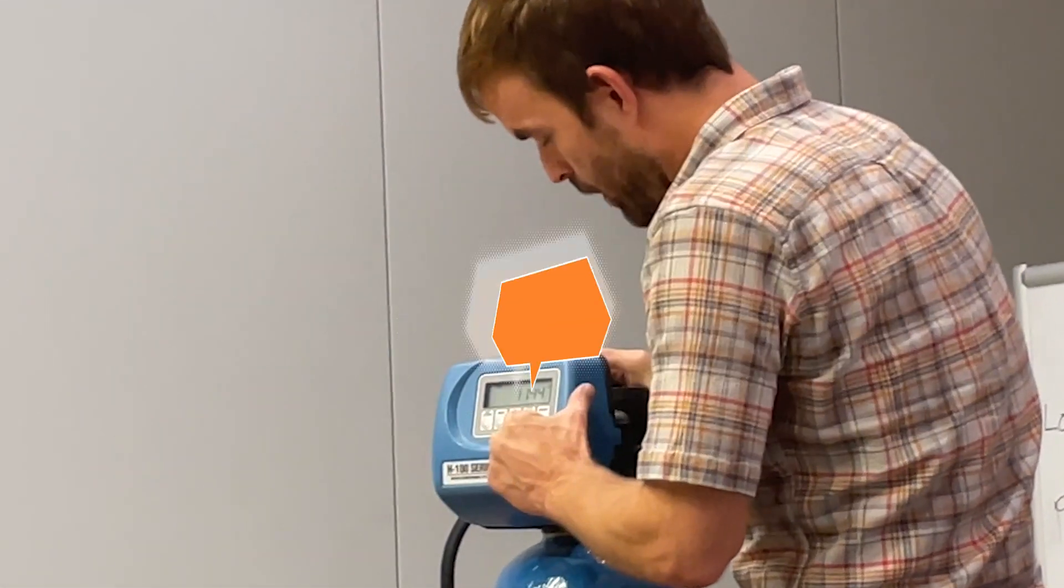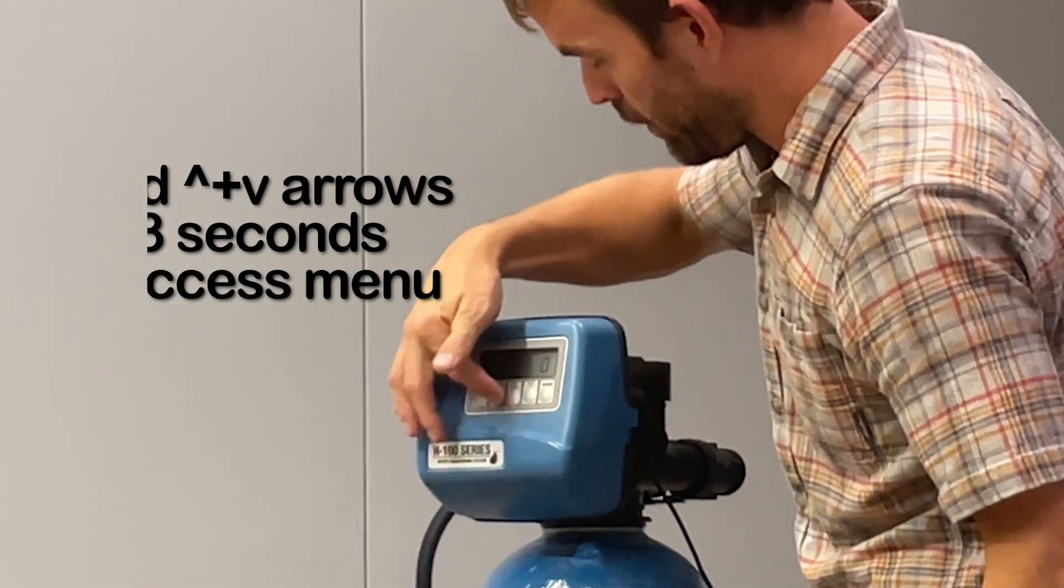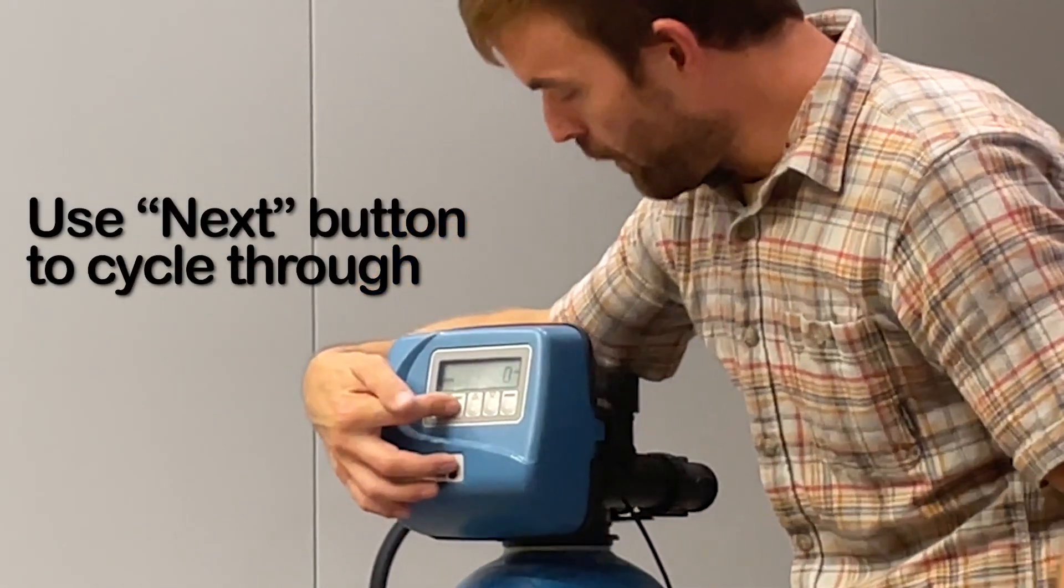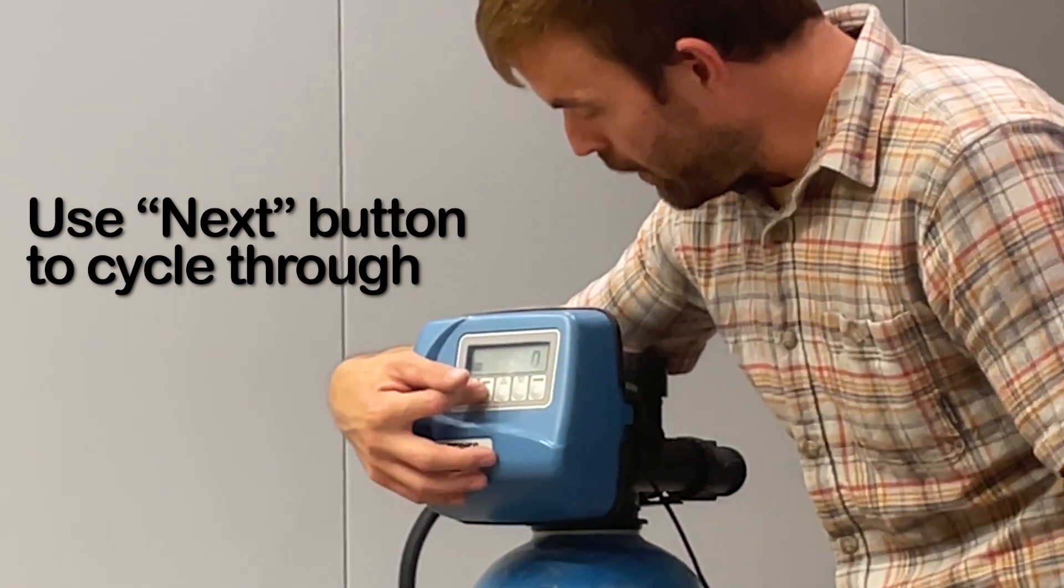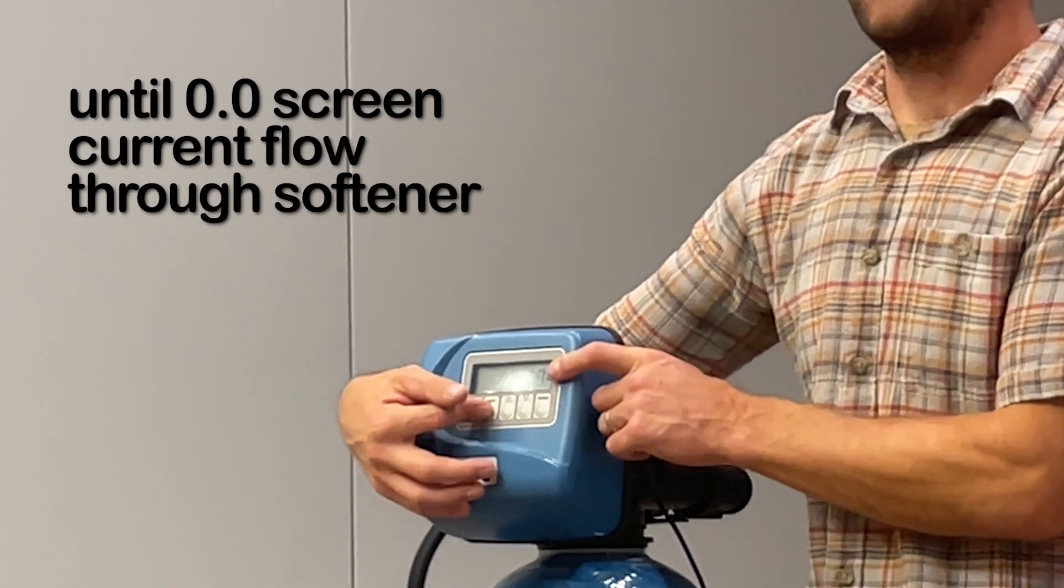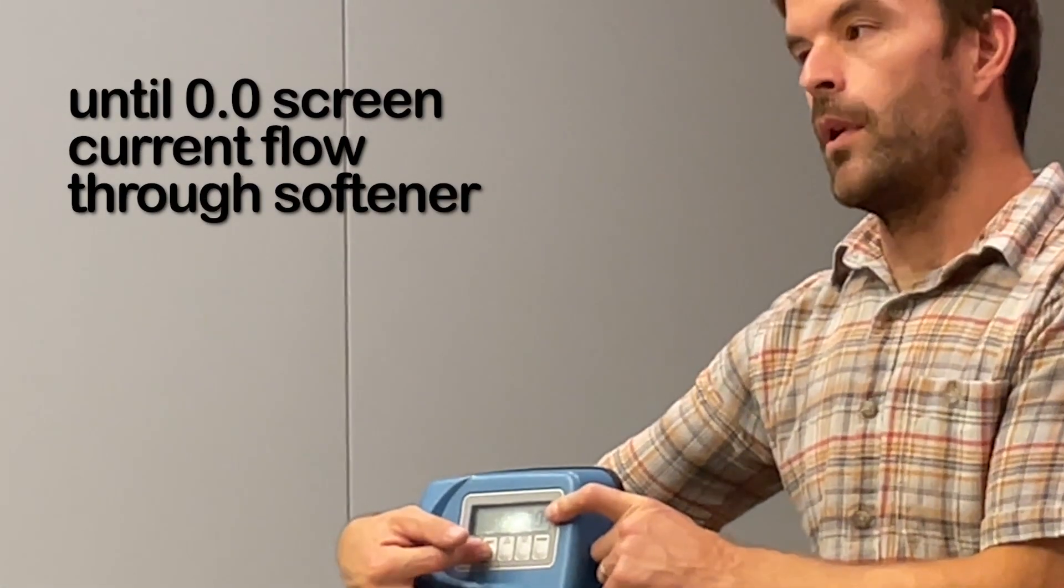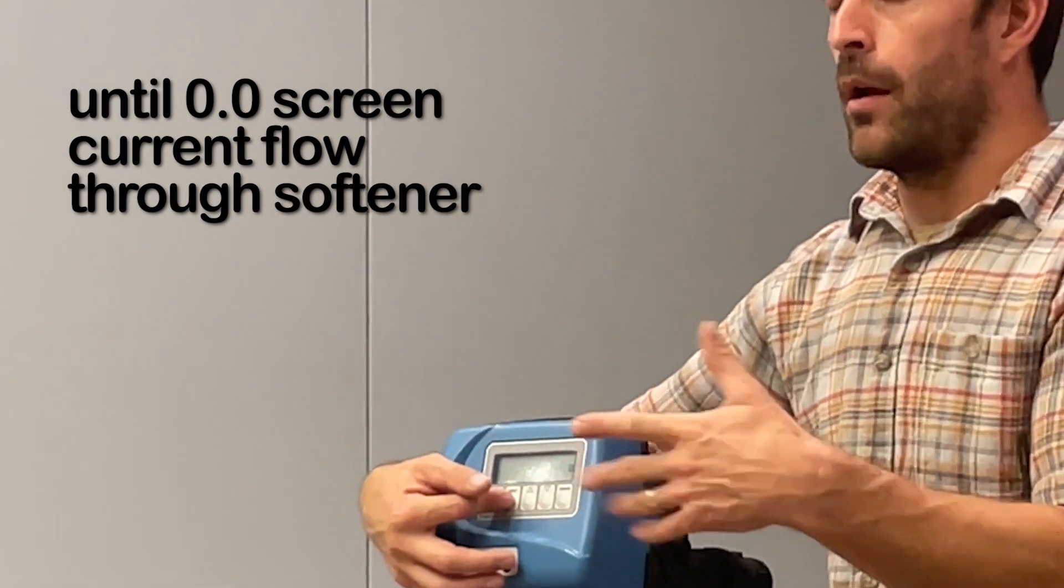Press up and down for three seconds to bring you to this menu. It'll tell you what day your regen is, how many gallons you need until regen, your average water usage for a seven-day period, and your last six to seven days of water usage. This stage where it flashes 0.0 tells you your current flow through the softener. Run some water.